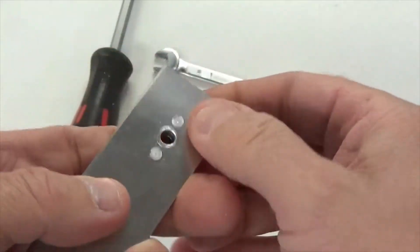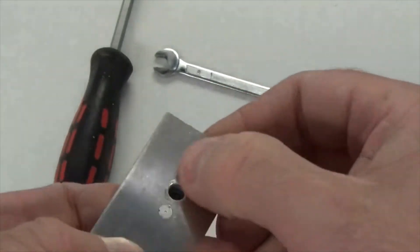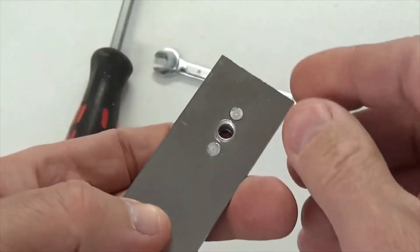especially in a tight spot. And you get it wrong, you can end up with the countersink of the rivet either tipped or a bit proud. Yeah, it can be a bit fiddly.